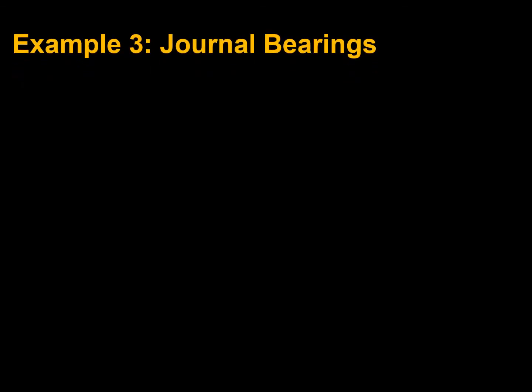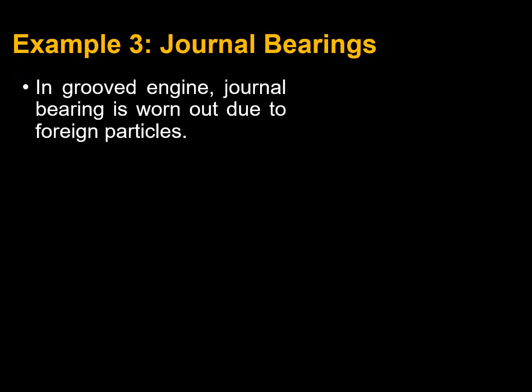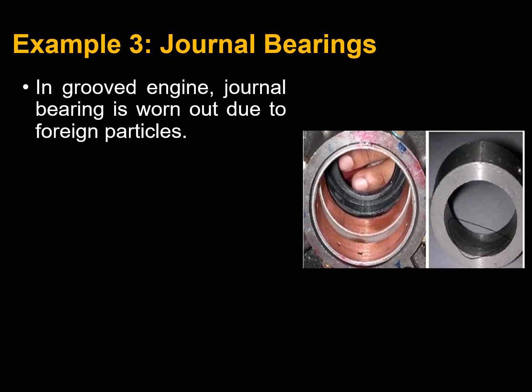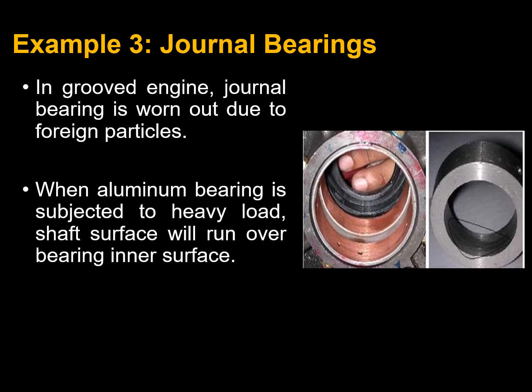In crude engines, journal bearings are worn out due to foreign particles. When an aluminum bearing is subjected to heavy load, the shaft surface will run over the bearing inner surface.